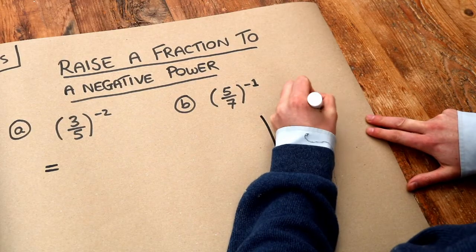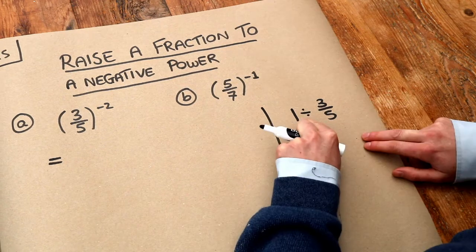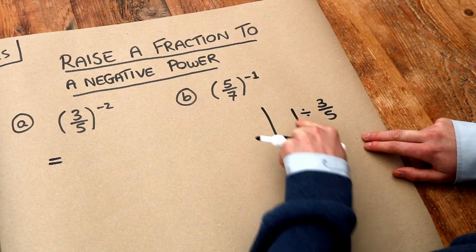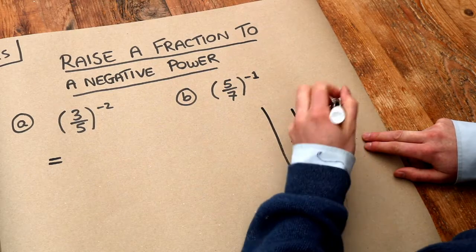If I did 1 divided by this fraction. Well when we divide by a fraction, now do you remember keep change flip? Well I keep this as it is, change the divide to a times, and flip this fraction.